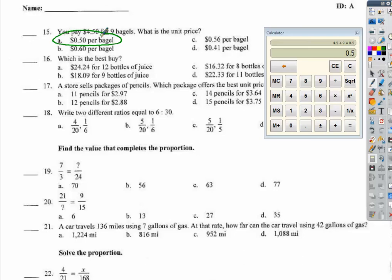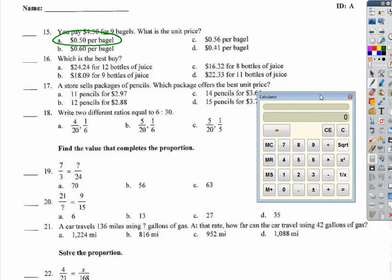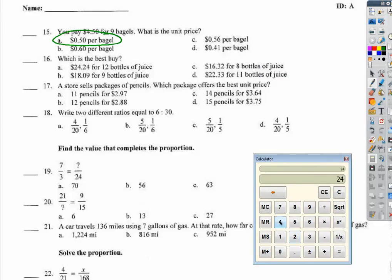Which is the best buy. We need to do the same thing we did before. We go 24 divided by 12. And we get $2.02. Then, 16.32 divided by 8 is 2.04. Then 18.09 divided by 9 is 2.01. And then, 22.33 divided by 11 is 2.03. I think this is the best option.